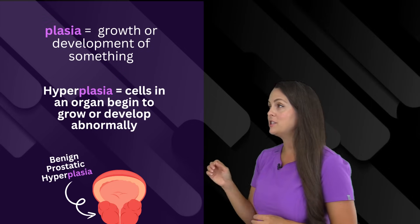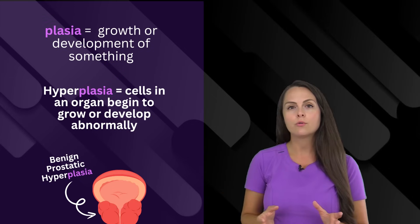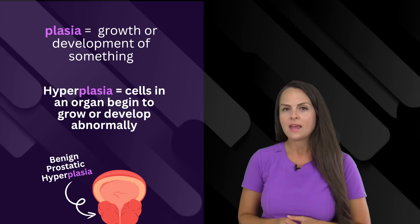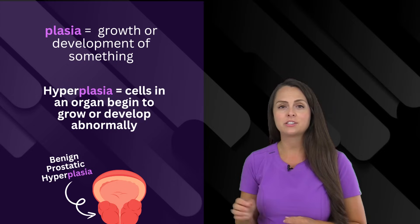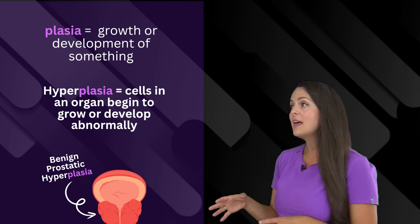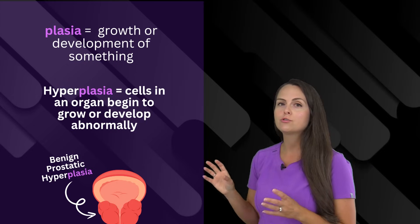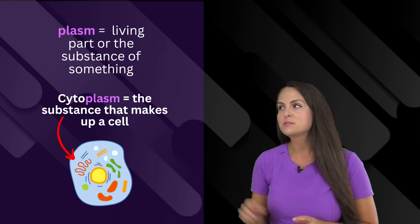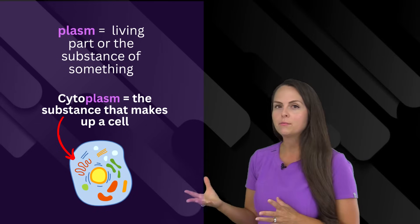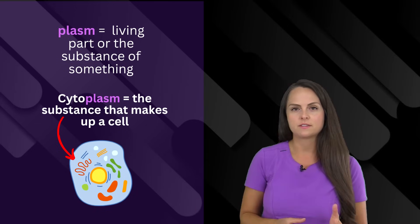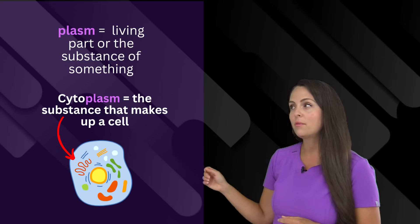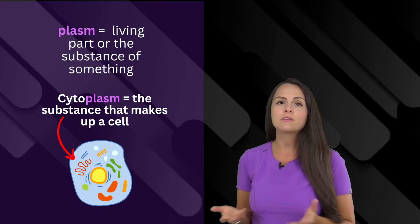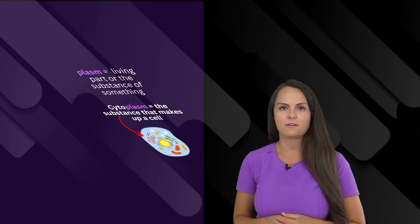Then we have plasia. This means growth or the development of something. If an organ has hyperplasia, we would say that the cells that make up that organ are starting to grow or develop abnormally. Then there's plasm. Plasm means the living part or the substance of something. So the word cytoplasm is the living part or the substance that makes up the cell.